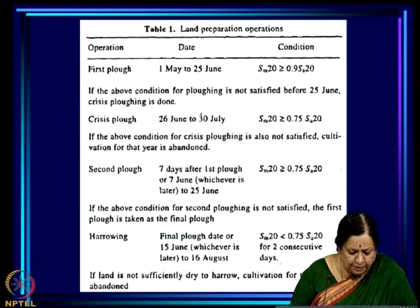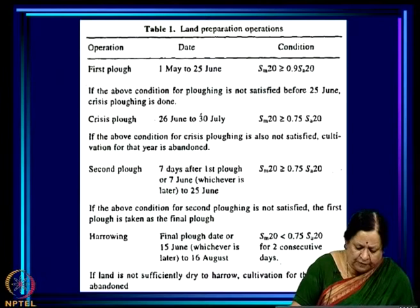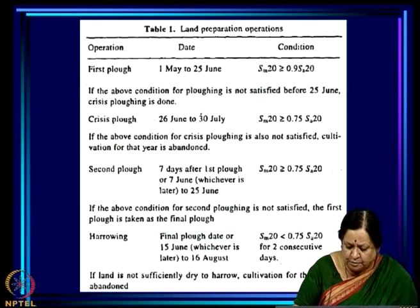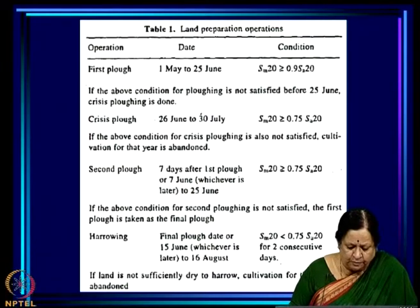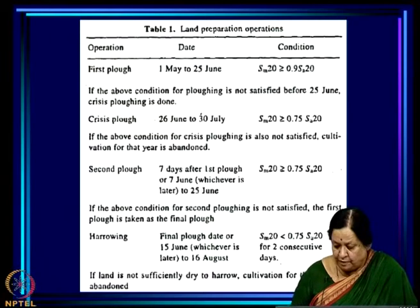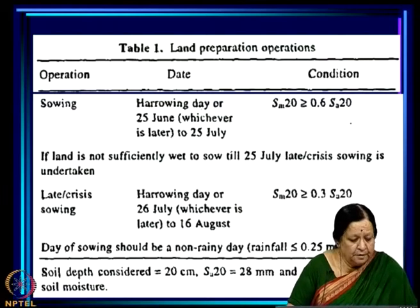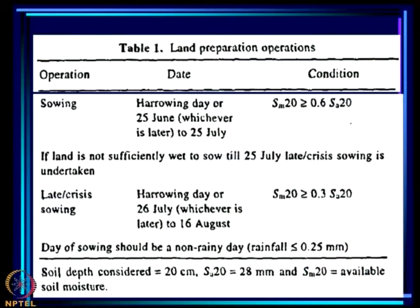Then there is harrowing, done from the final plough date or 15th June, whichever is later, until 16th August. The condition is that the soil has to be sufficiently dry for two consecutive days. If the land is not sufficiently dry to harrow, cultivation for that year is abandoned — they may have ploughed, but if the land never gets dry enough to harrow, they cannot carry on with groundnut cultivation.